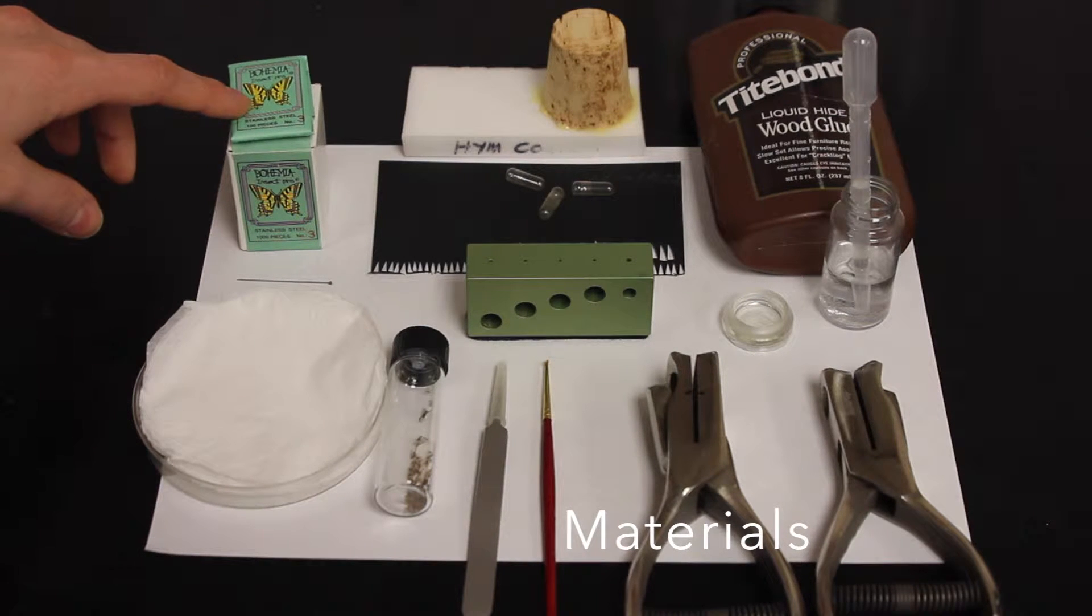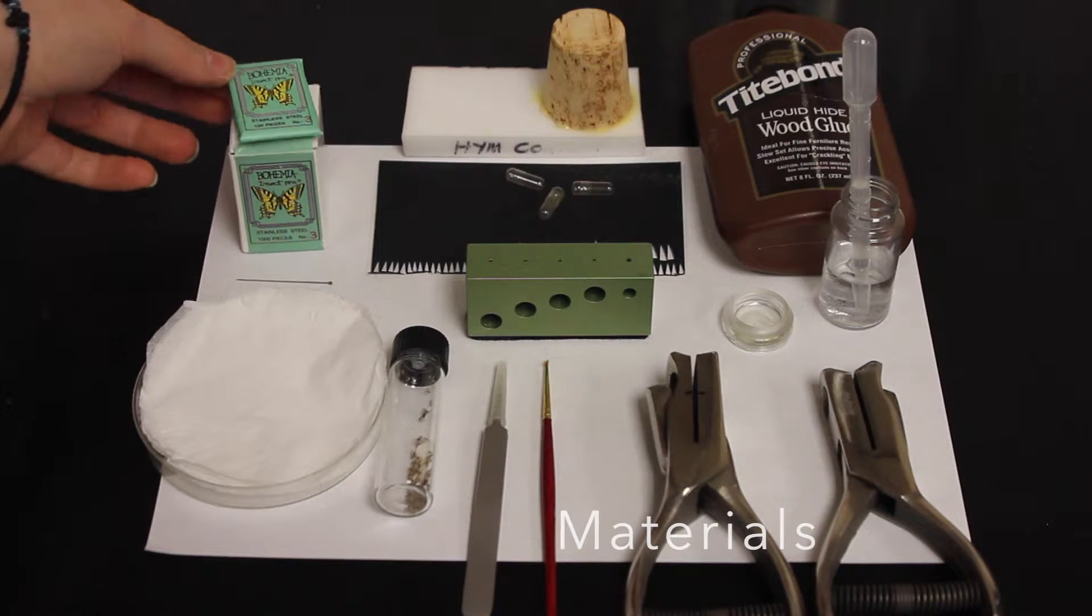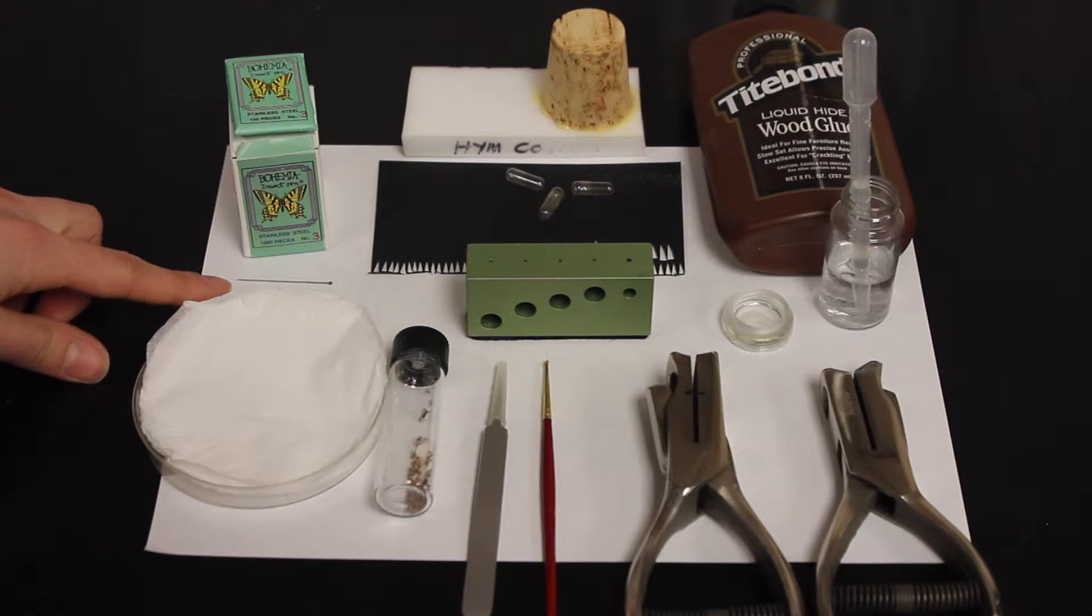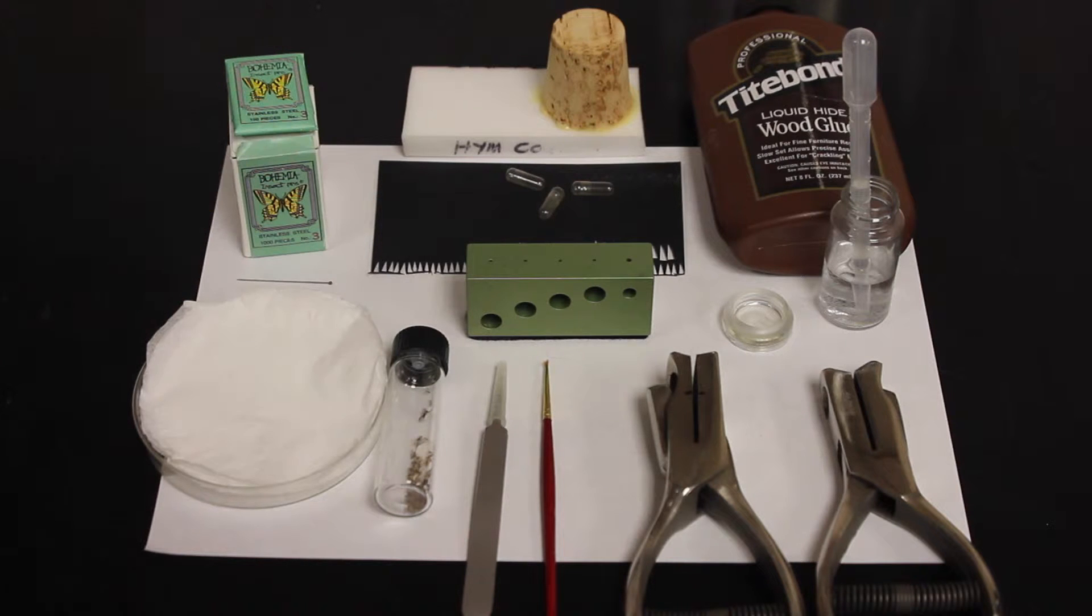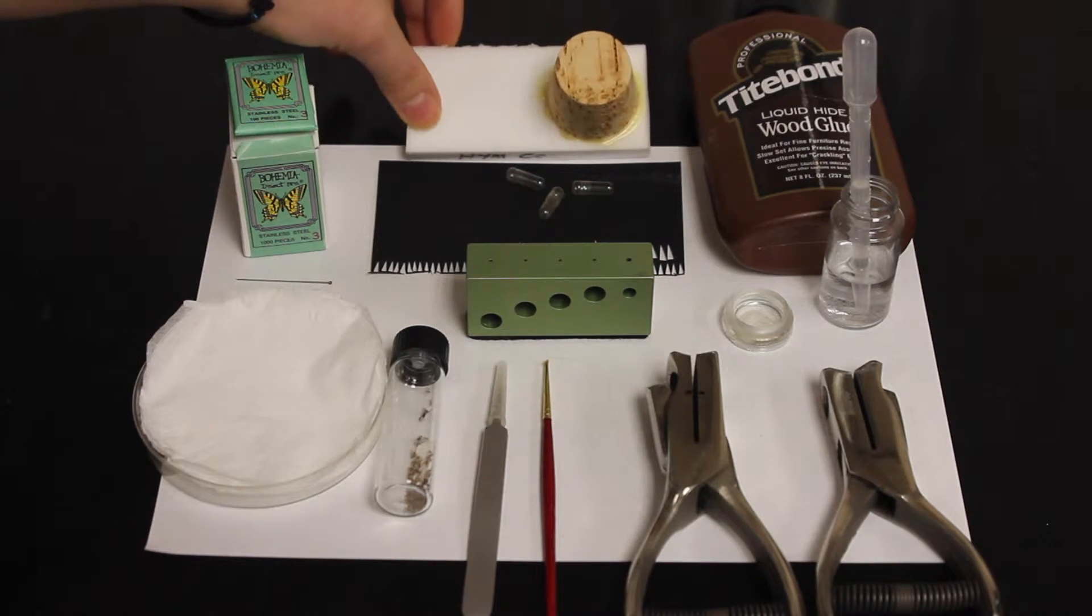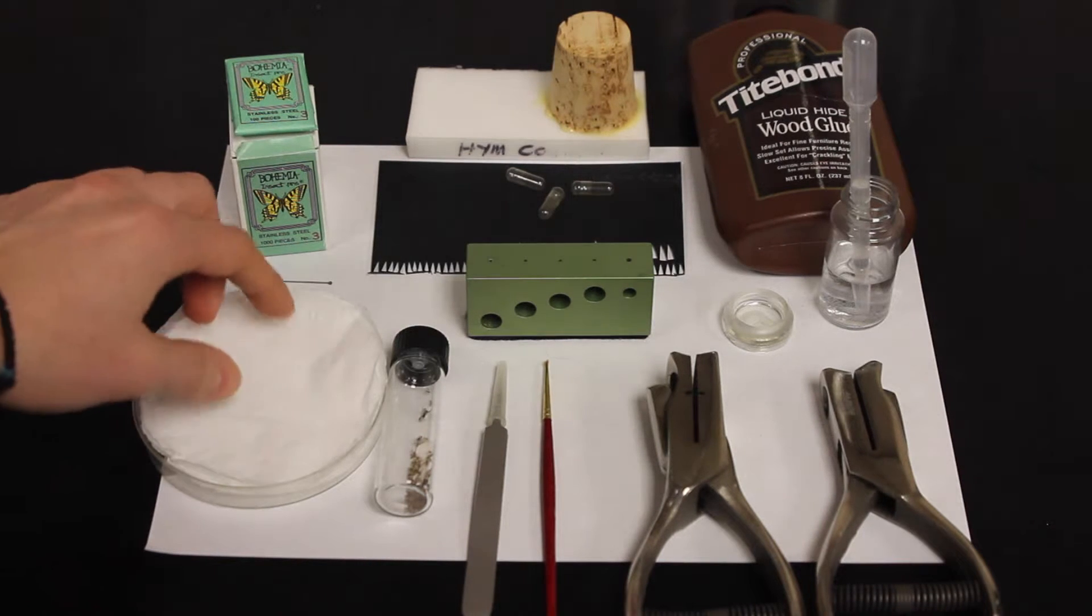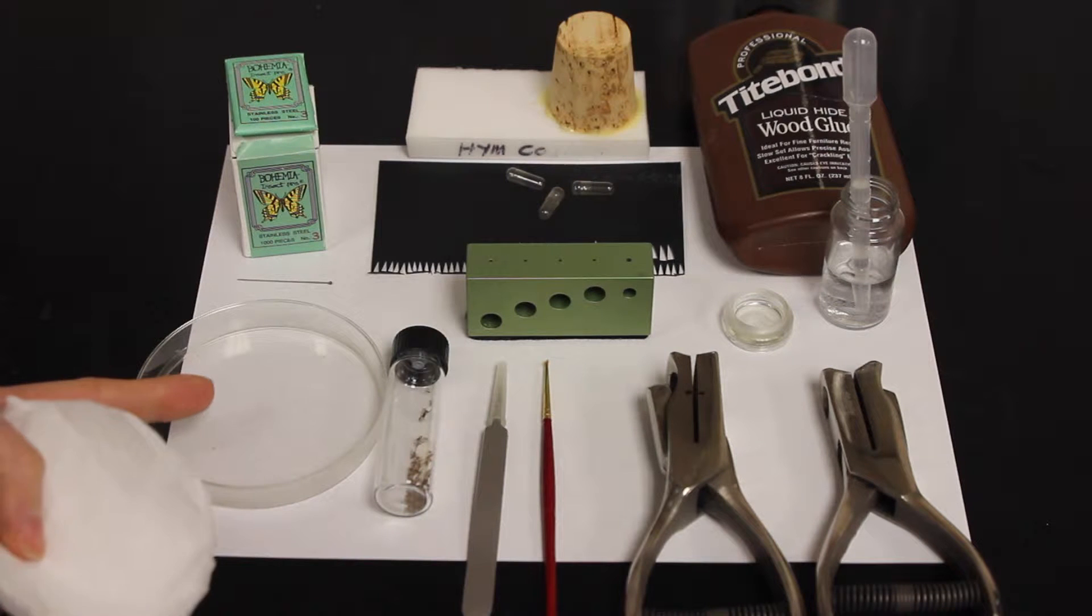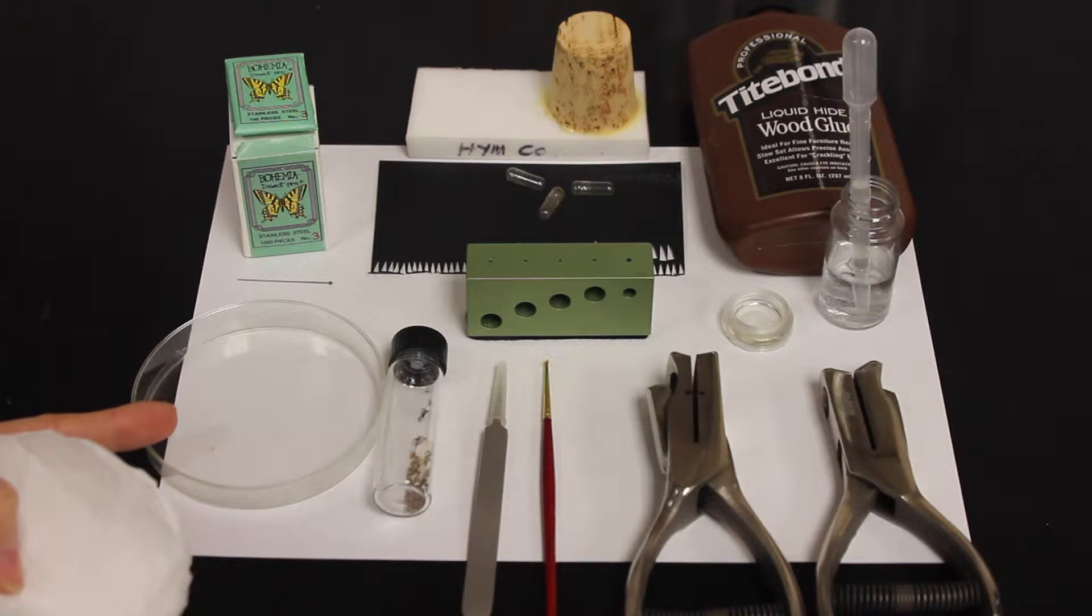Number 3 stainless steel insect pins come in a packet like this and they individually look like this. Black archival acid-free paper with long grains. Number 3 gel capsules for broken parts. A cork mounting board. Ten pieces of tissue paper that match the circumference of the petri dish.